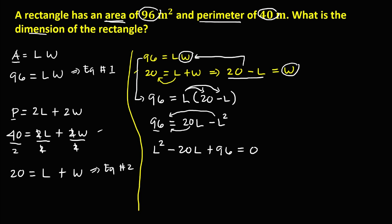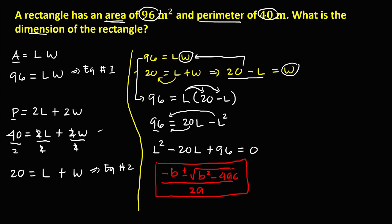We can solve this quadratic equation using factoring or the quadratic formula. Using the quadratic formula: L equals negative B plus or minus the square root of B squared minus 4AC, all over 2A. First we identify the values for A, B, and C. From the equation, A is the coefficient of L squared, so A equals 1. B equals negative 20, and C equals positive 96.